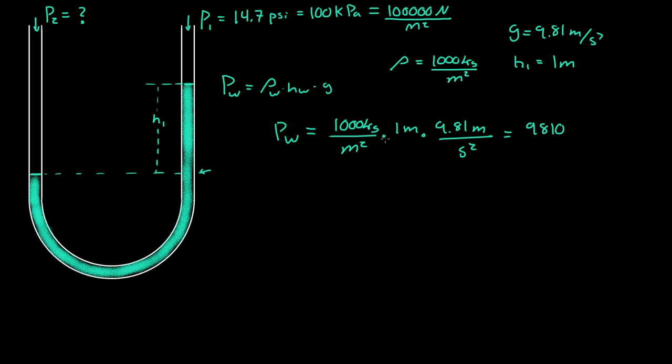Looking at the units: one meter cancels with one of the meters cubed, leaving kilograms per meter second squared. That doesn't seem like a pressure at first, but it actually is.